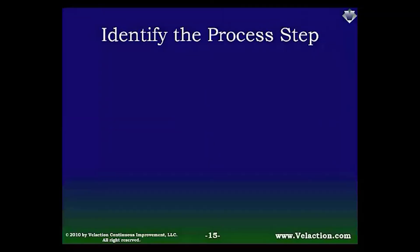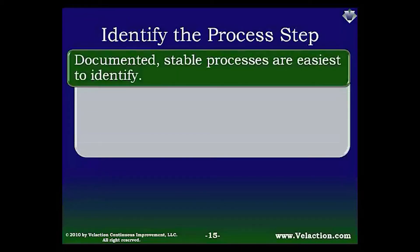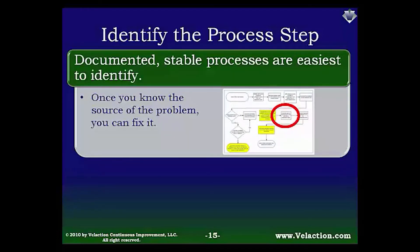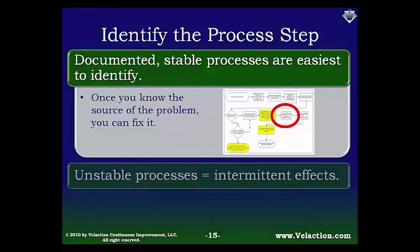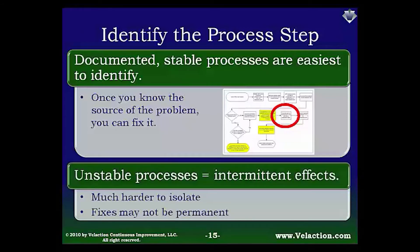The goal of root cause analysis is to isolate the source of the problem so you can permanently eliminate it. This is easiest to do when a process is standardized and well documented — you'll be able to visually see the step where the problem originates. In many companies, this situation is the exception rather than the norm. In less structured organizations, the root cause will be much harder to identify, and any fix put in place may not be followed every time. To truly solve a problem for good, you will have to standardize your processes.